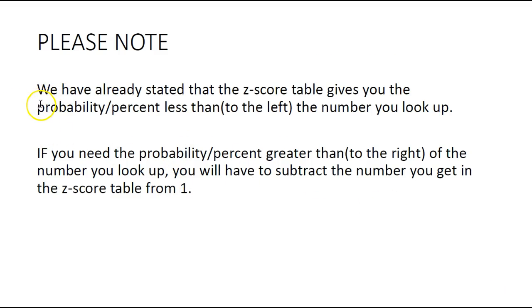A couple things to keep in mind: the z-score always gives you the amount to the left, or less than. From the last example, if you need to find the probability greater than a value, you would subtract what you get out of the table from one. If you want the right side of a graph, you have to subtract what comes out of the z-score table.